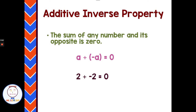Next, the additive inverse. For every number out there, there is an opposite. When you add the opposite and the original number, you get 0. So 2's opposite is negative 2 — add them together and you get 0. A has the opposite negative A; A plus negative A equals 0. Every number has its opposite, and they add up to 0 — that is the additive inverse property.